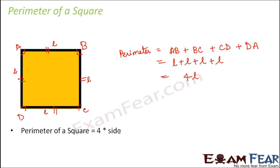You might be thinking that square and rectangle look very simple, and so finding their perimeters is also simple.